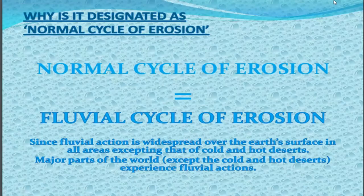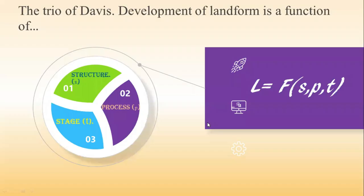Davis's cycle is also known as the normal cycle of erosion and the fluvial cycle of erosion, since fluvial action is widespread over the Earth's surface in all areas except cold and hot deserts. Davis's famous trio is structure, process, and stage — these three factors play an important role in the origin and development of landforms.